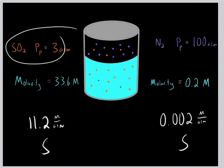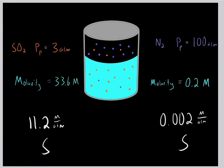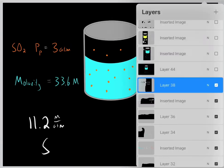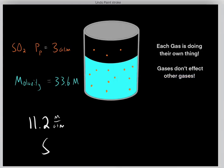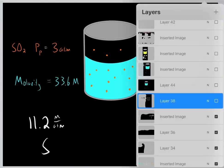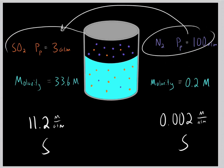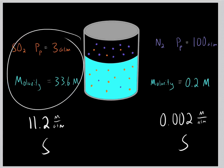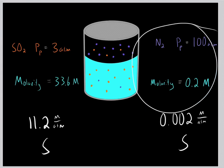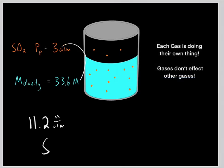Each gas is doing its own separate thing — these gases are not influencing one another, they are essentially invisible to one another. For example, we could make the nitrogen gas disappear and the 3 atmospheres of sulfur dioxide would still have a molarity of 33.6 molar. Whether the nitrogen gas is around or not, it has no impact on the sulfur dioxide. Every gas is doing its own thing.